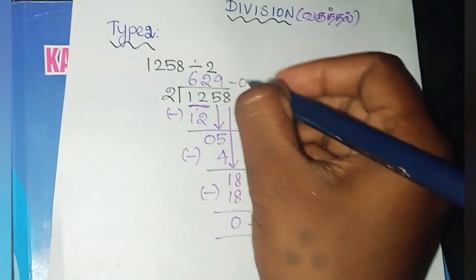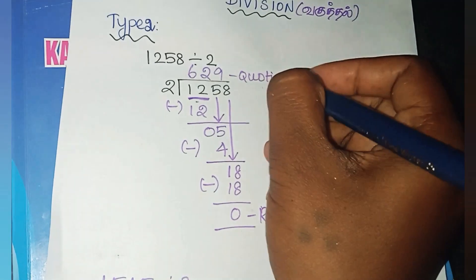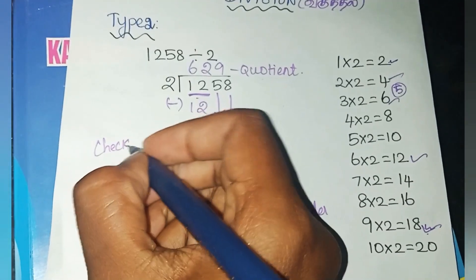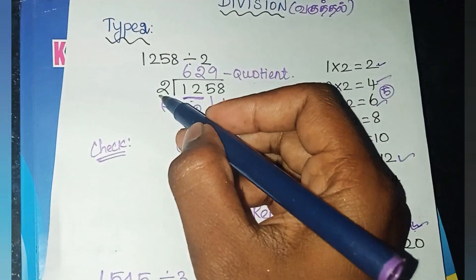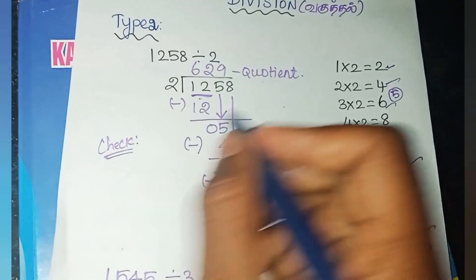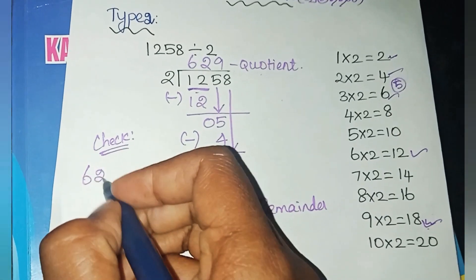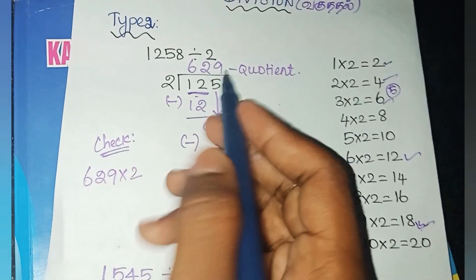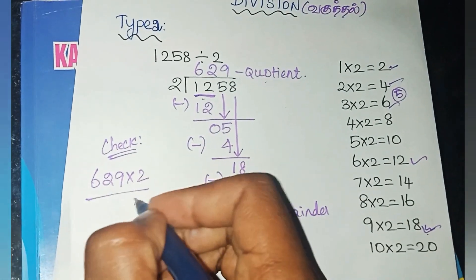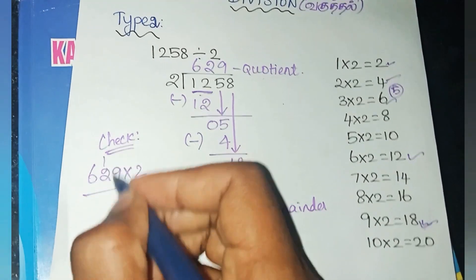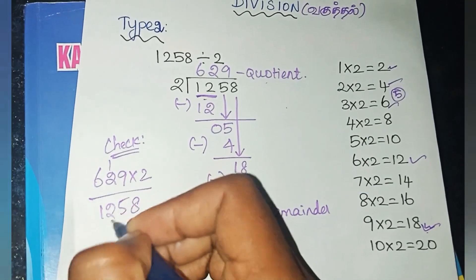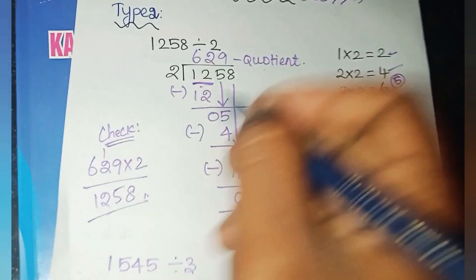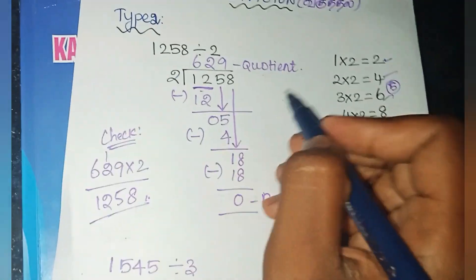This is the answer. For checking — if you want to verify your answer is correct, you can multiply by 2. The answer is 629. 9 times 2 is 18, carry 1. 2 times 2 plus 1 is 5. 6 times 2 is 12. We get 1258. Our answer is correct.